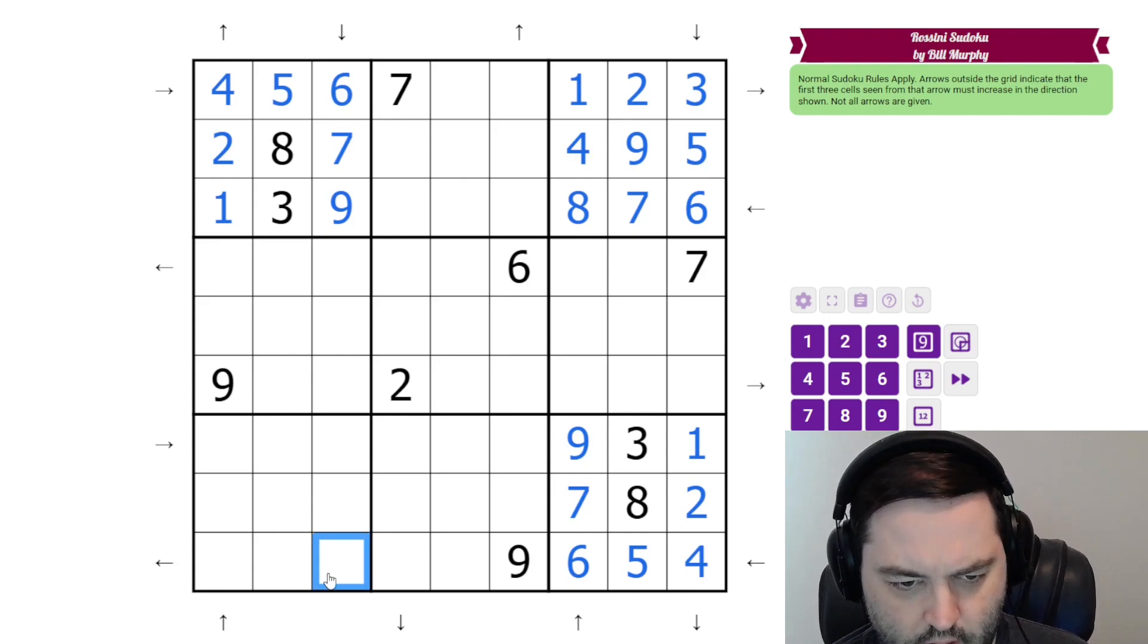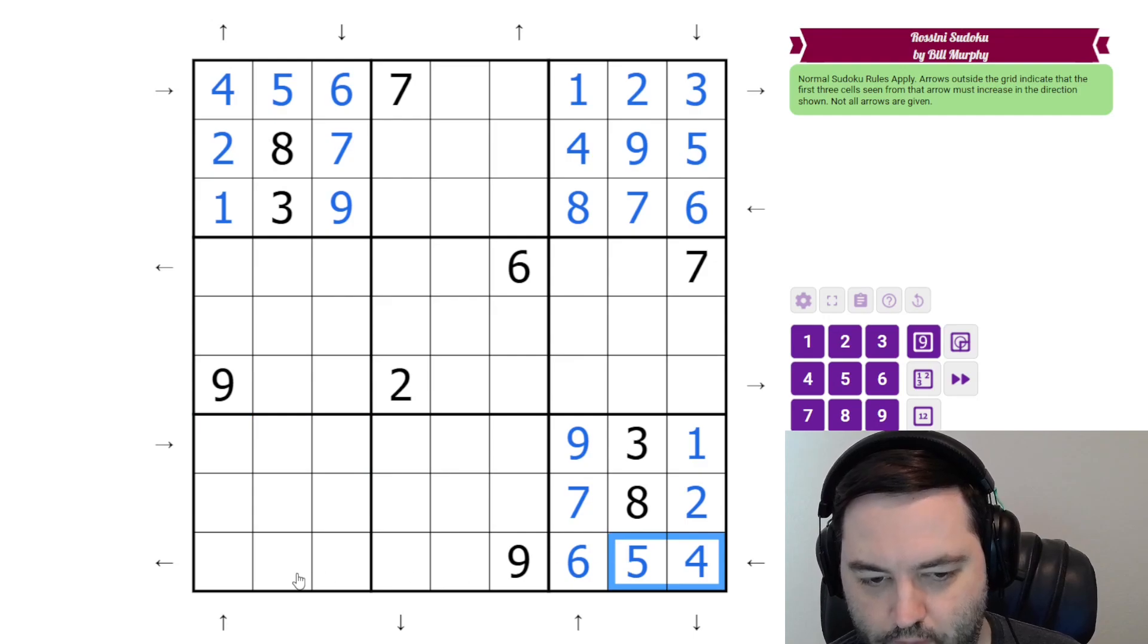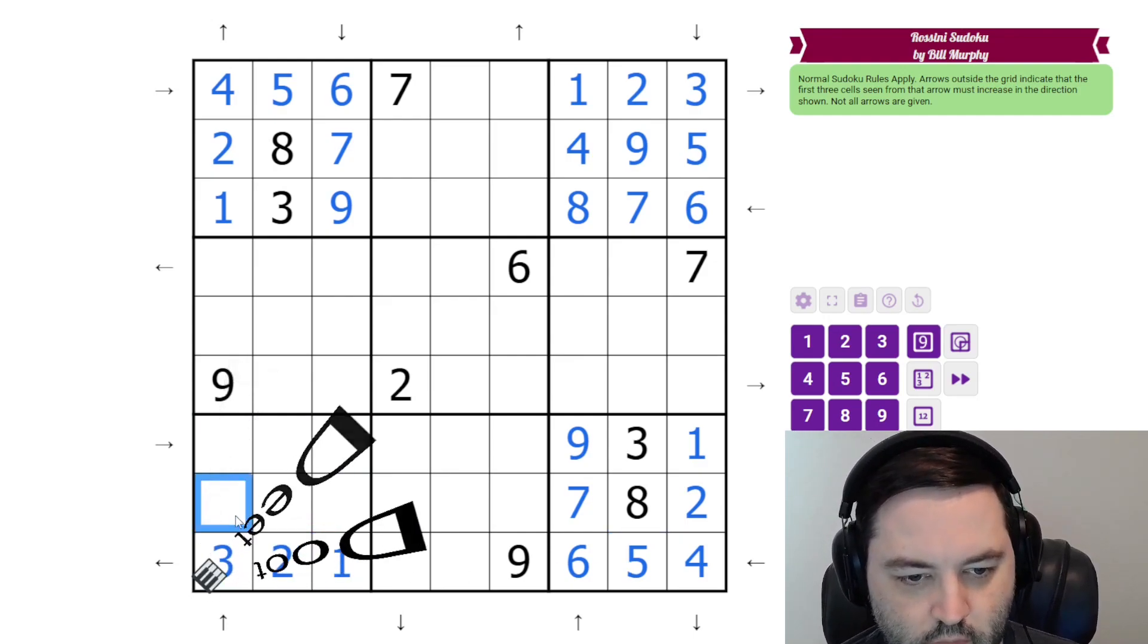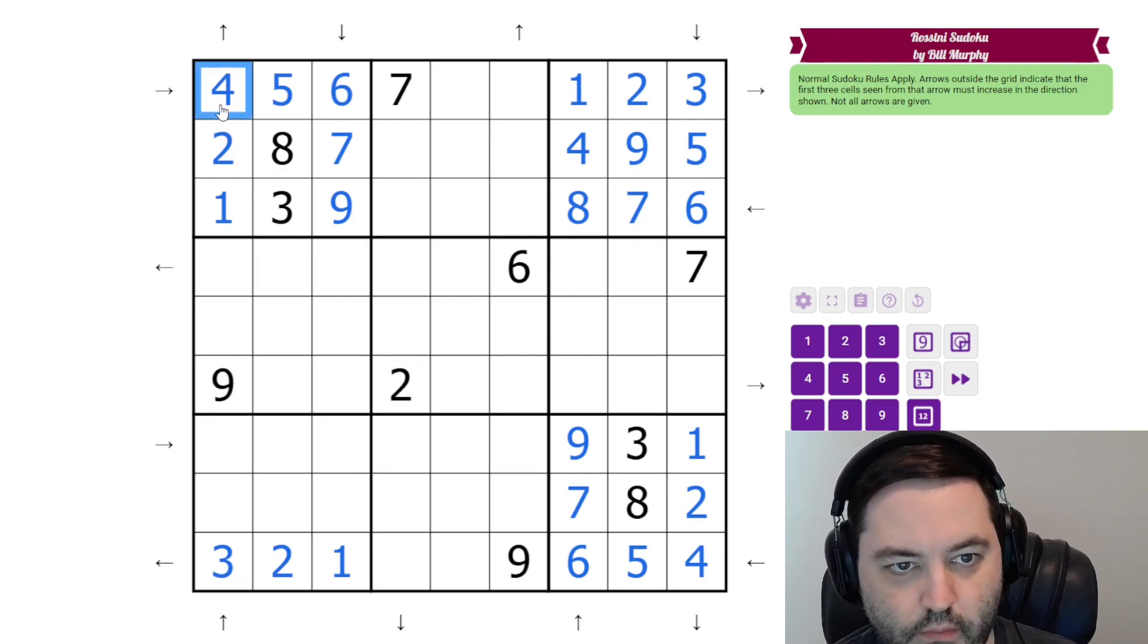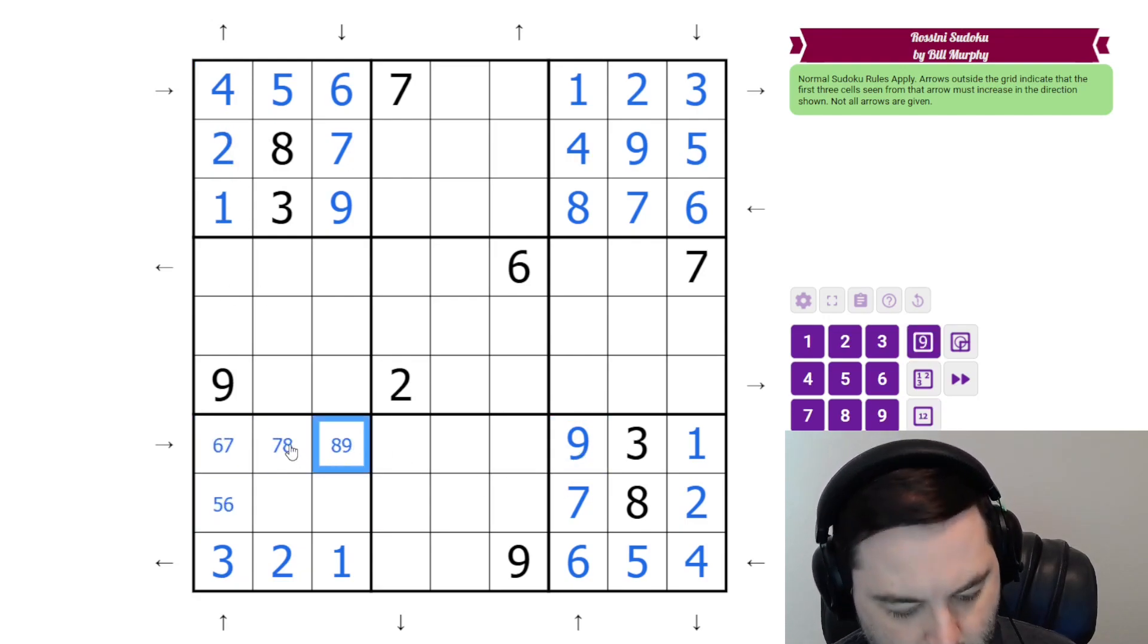Can do the same sort of thing down here, I suspect. So again, we have, in this case, left, up, right, another seven-cell thermo. Again, we have four or five here, so this is going to have to be three, two, one. And then we have a four at the top again, so five, six, seven, eight, nine, and we have a nine right there.